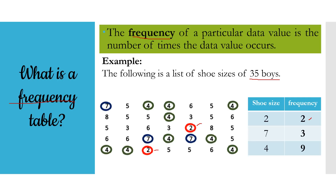Next, let us count how many sevens there are: one, two, and three. It means that the frequency of shoe size seven is three. And for the last one, the frequency of shoe size four — let us count: one, two, three, four, five, six, seven, eight, and nine. That means nine is the frequency of four because it appeared nine times in our list. I hope you were able to understand what frequency is.